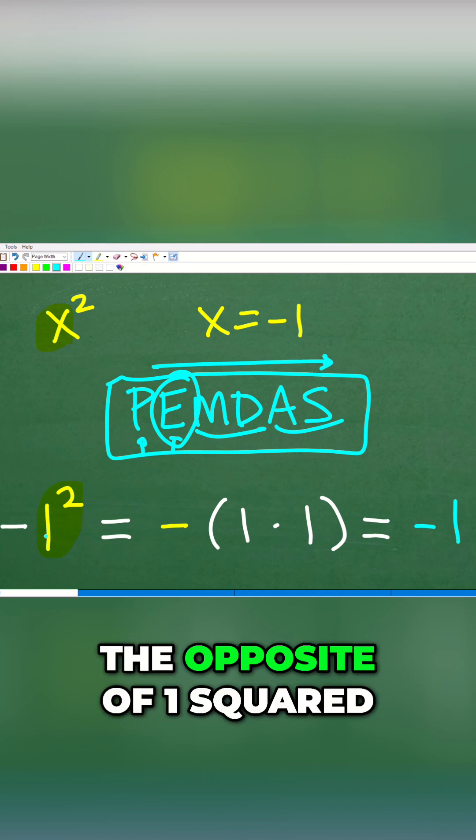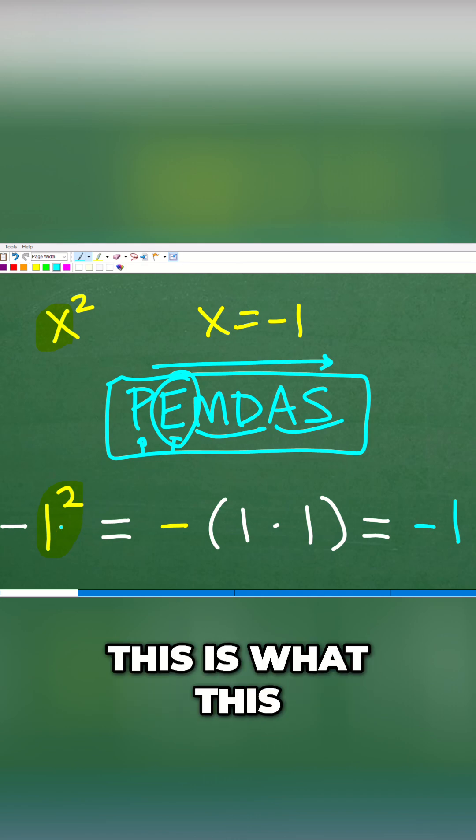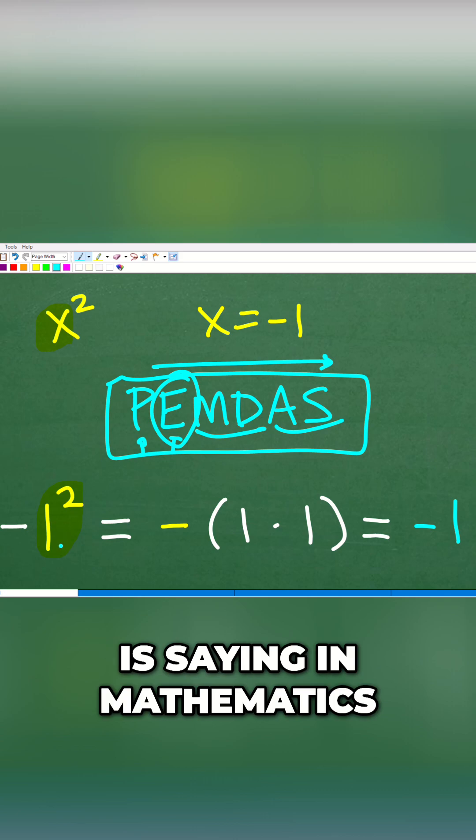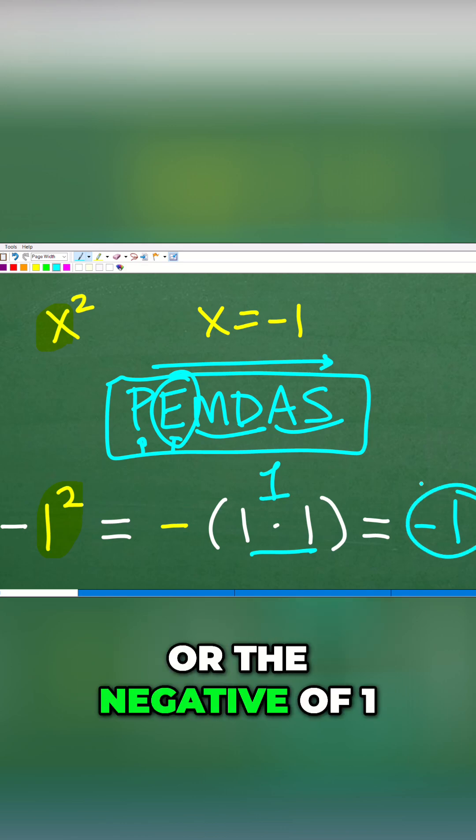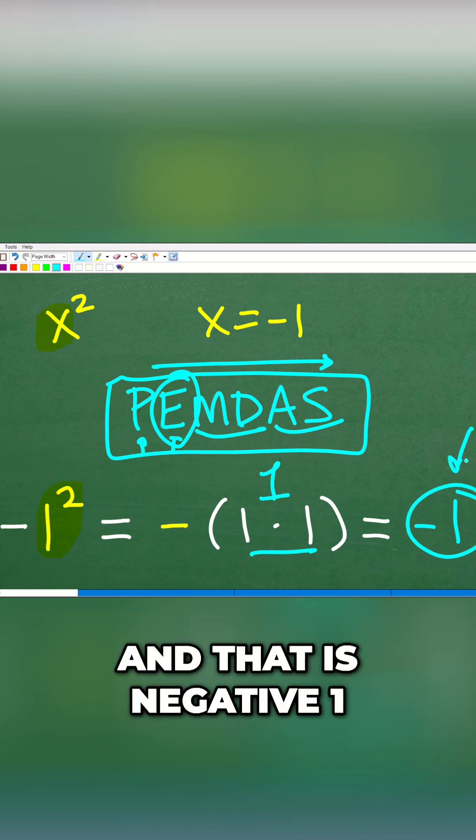This is the negative, the opposite of one squared. That's what this is saying in mathematics. So one squared is what? Well, it's one times one, so that's going to be one. And then we're going to take the opposite of one or the negative of one, and that is negative one.